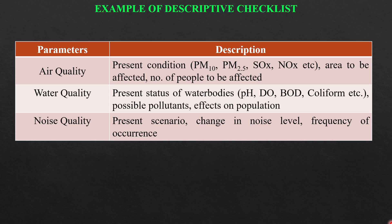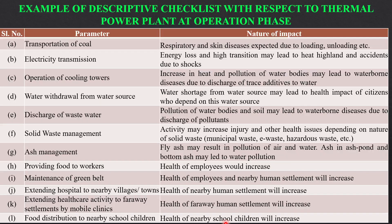This is an example of a descriptive checklist. Air quality, water quality, and noise quality are further subclassified into present conditions. For air, parameters such as particulate matter PM10, PM2.5, SOX, and NOX are measured for baseline data collection, along with area to be affected and number of people to be affected.